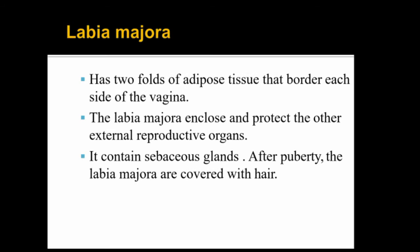The labia majora has two folds of adipose tissue on each side of the vagina. The labia majora encloses and protects the external reproductive organs. It contains sebaceous glands. After puberty, the labia majora is covered with hair.